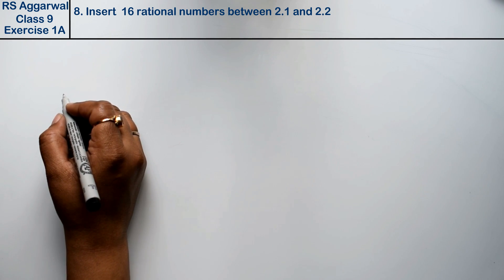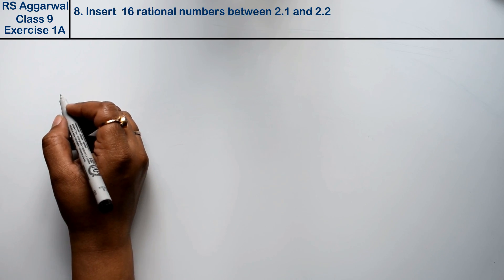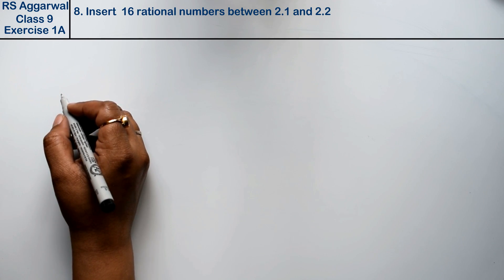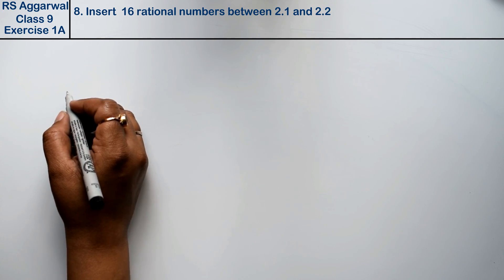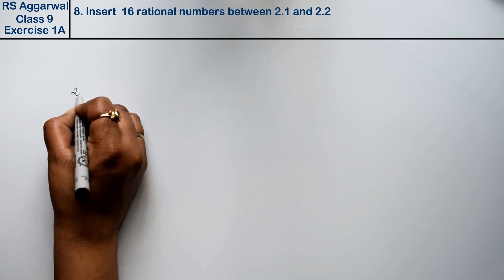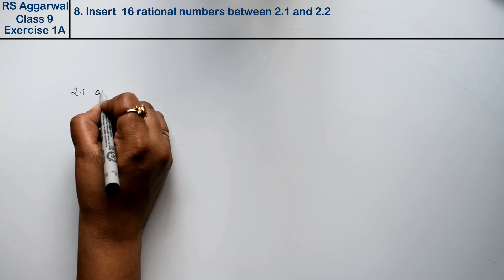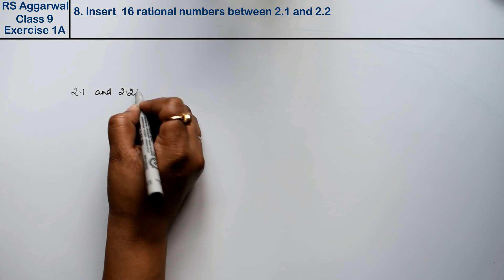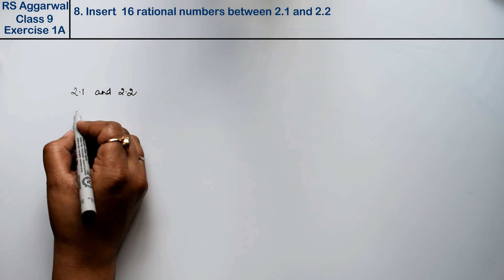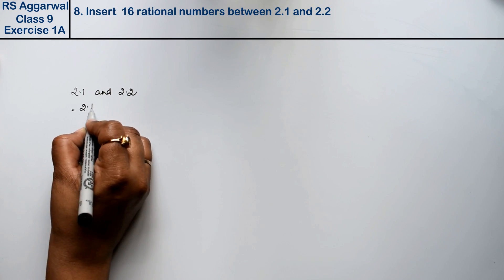Let's do question number 8 of exercise 1A, that is number system. Question number 8 is: insert 16 rational numbers between 2.1 and 2.2. Friends, 2.1 and 2.2, we will write as rational numbers.